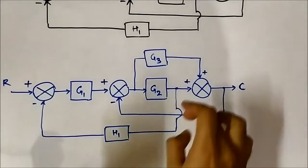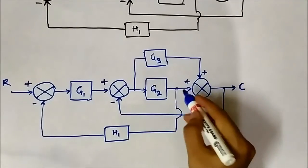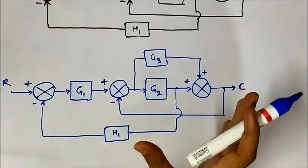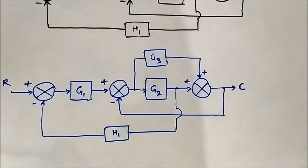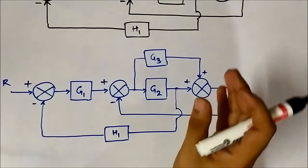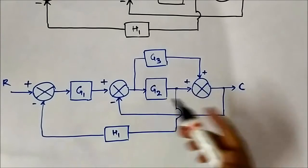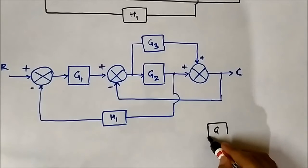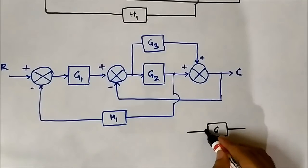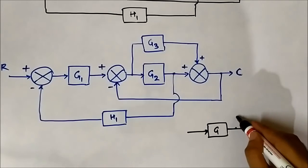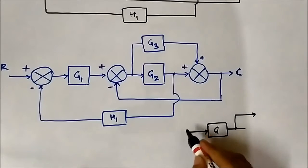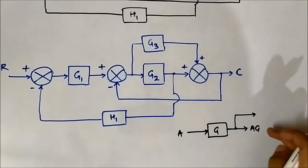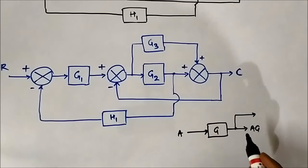If you notice this takeoff point here — if we shift this takeoff point, there is a chance that the whole block diagram can become simpler. The rule we will apply is shifting a takeoff point behind a block. The basic rule is: suppose we have a block with input A and gain G, so the output is A·G. The takeoff point value is also A·G.